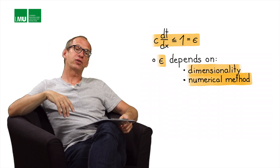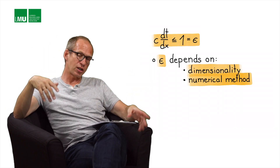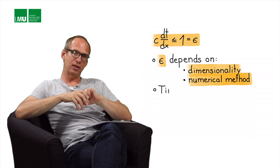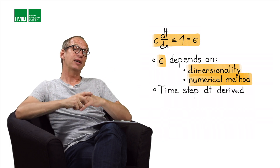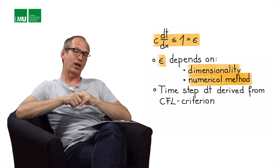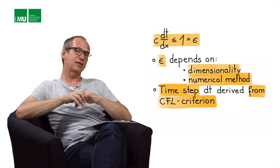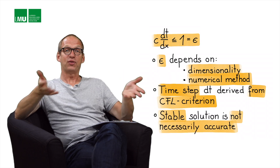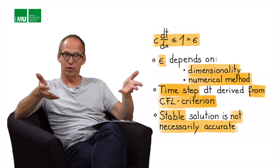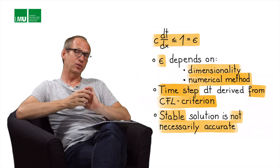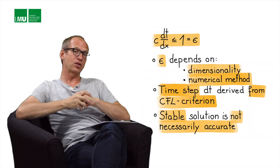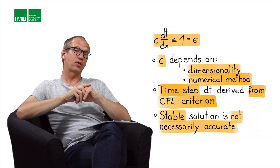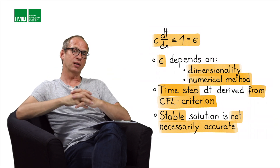Because our space increment dx is usually imposed by the physical problem, the time step required for a stable solution is derived from the Courant criterion. But another important message is that a stable solution does not mean it's accurate. As we've seen, we had stable solutions but found numerical dispersion, so we must compare with analytical solutions or perform convergence tests.